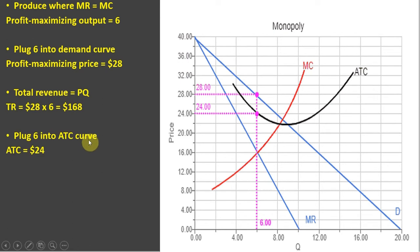The next step is to find some information about cost. At 6 units of output, we're going to take that and plug it into the average total cost equation, or average total cost curve. So take this 6, move it up vertically until we touch average total cost, come across, and we see that the per unit cost of production is $24.